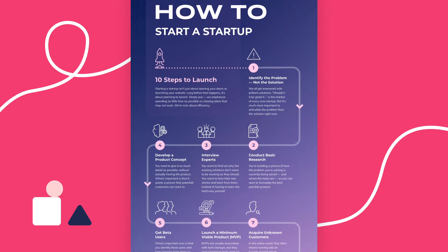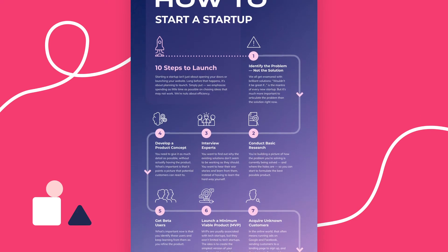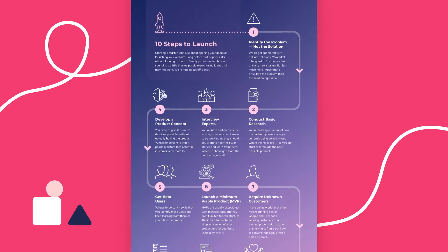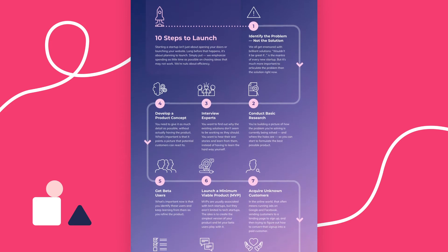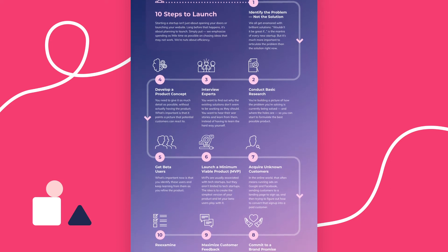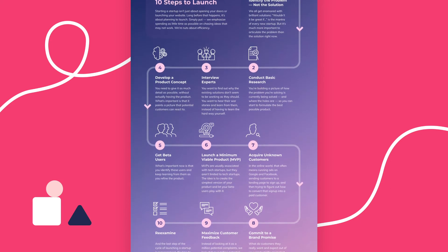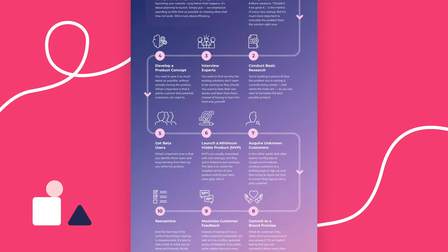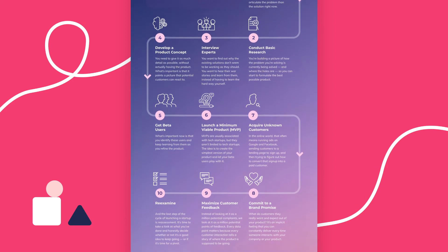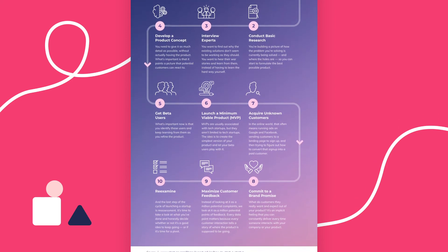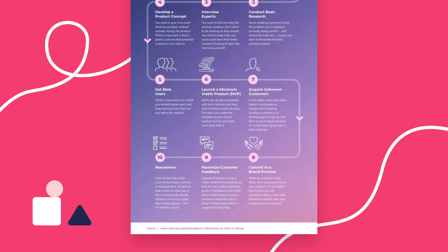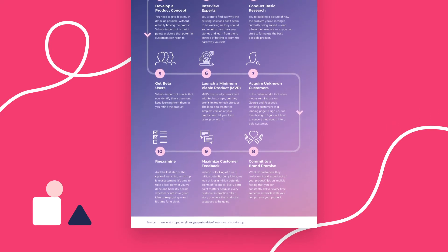The timeline infographic is best used to show the evolution of a certain idea, process, or project as time goes by. You can show how ideas and technologies were developed, or the history of a company from birth until now. This specific template shows a 10-step process on how to start a startup, providing an easy-to-follow list of steps organized in chronological order.